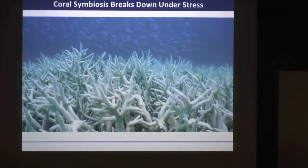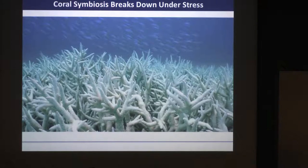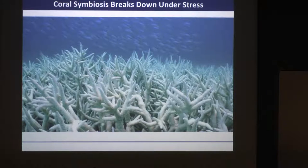We can go from that pristine coral reef environment to something that looks much more degraded. As corals experience various stressors, they can break down that symbiosis between the coral and the symbiotic algae — called coral bleaching — and here we see the denuded coral skeleton. The corals themselves are basically translucent, so we see the white calcium carbonate skeleton when it's devoid of algal symbionts.